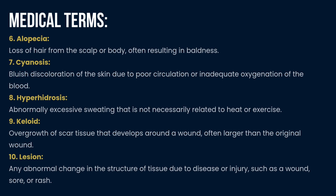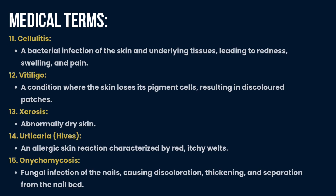Alopecia: loss of hair from the scalp or body. Cyanosis: bluish discoloration of the skin due to poor circulation. Hyperhidrosis: abnormally excessive sweating not related to heat. Keloid: overgrowth of scar tissue. Lesion: any abnormal change in the structure of tissue due to disease or injury. Cellulitis: a bacterial infection of the skin and underlying tissue leading to swelling, redness, and pain. Vitiligo: a condition where the skin loses pigment cells resulting in discolored patches. Xerosis: abnormally dry skin. Urticaria: hives, an allergic skin reaction. Onychomycosis: fungal infection of the nails.